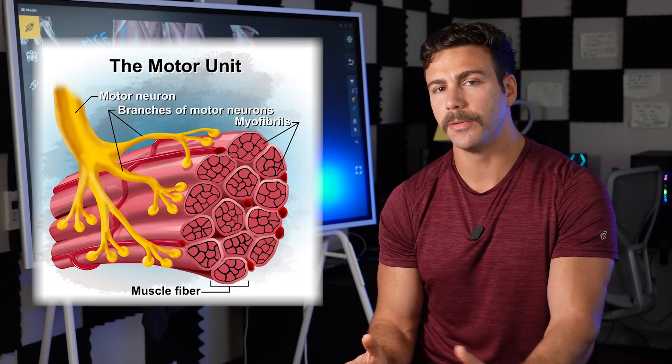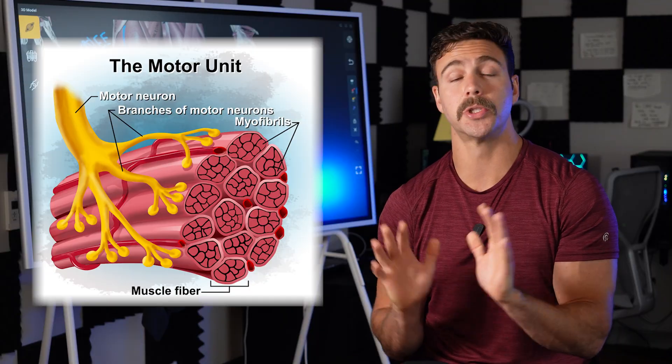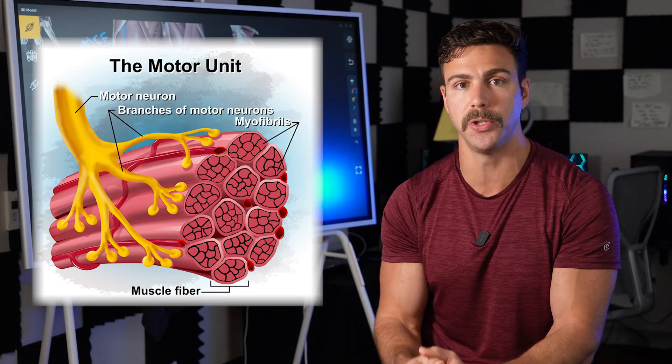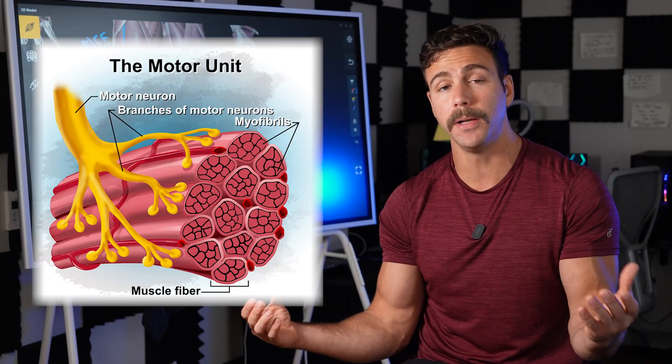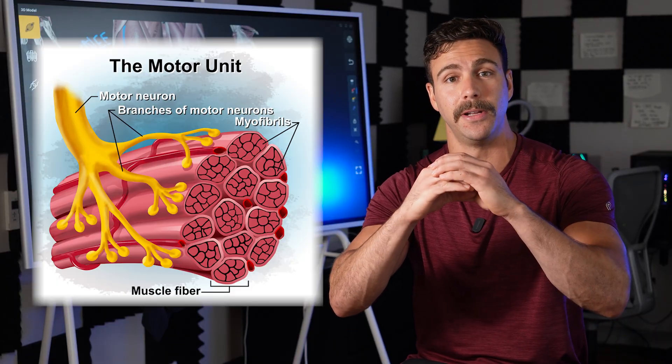Well, we have thousands of muscle fibers within a single muscle, and it would be a logistical nightmare for your brain to control each muscle fiber individually. So what it does to make its job easier is it bundles these muscle fibers into bundles known as motor units.